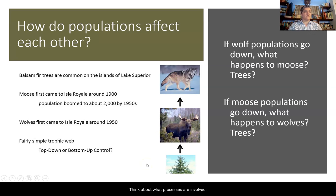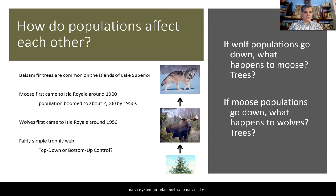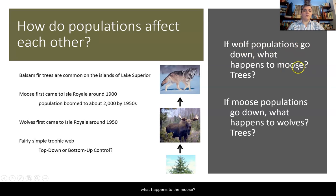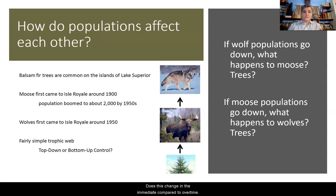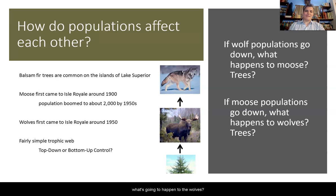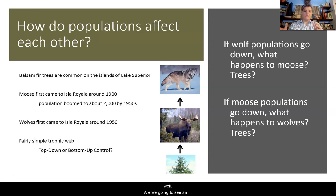Think about what processes are involved, who consumes what, and the amount necessary for each system in relationship to each other. If the wolf populations go down, what happens to the moose? Is that moose population going to increase or decrease? And what about the trees based on the changes to the moose population? Does this change immediately or over time? Conversely, if the moose population goes down, what's going to happen to the wolves? Will the wolf population change, and if so, how? And then what happens to the tree population — will we see an immediate change, and what happens over time?